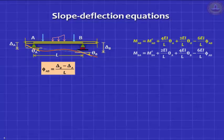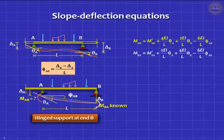When you have the far end on a hinge support, as in this case, the bending moment at joint B is either zero or something known. In such cases, we do not need to write a separate equation for MBA. We need only one equation, and we can ignore theta_B as an unknown. That equation is MAB equals MF_AB, which is the fixed end moment in a propped cantilever, plus 3EI/L*theta_A minus 3EI/L*phi_AB.